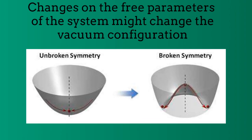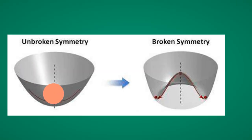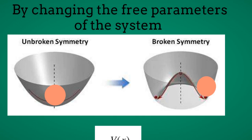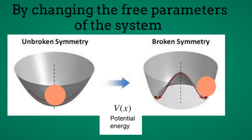However, if we change the parameters of the system, we can find some combinations where the shape of the potential changes, changing then the vacuum or ground state configuration of the system. As the change in the shape of the potential suggests, under spontaneous symmetry breaking, the bottom of the potential becomes a peak, which is unstable. In such a case, there are many possible stable ground states and the system has to select arbitrarily one of them. The new stable ground state violates the symmetry of rotations around the vertical axis, even if the original system still satisfies the same symmetry.